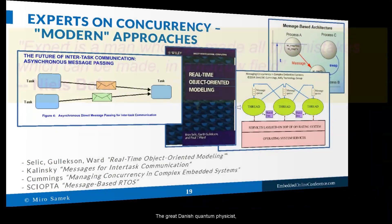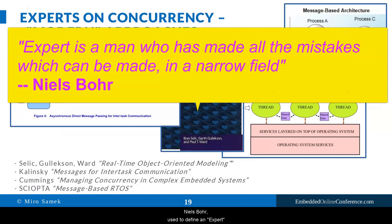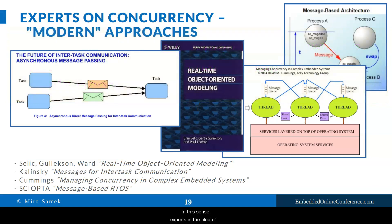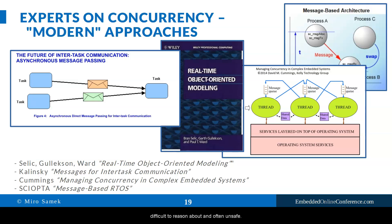The great Danish quantum physicist Niels Bohr used to define an expert as a man who has made all the mistakes which can be made in a narrow field. In this sense, experts in the field of concurrency notice that the use of naked threads and the multitude of blocking mechanisms often leads to systems that are unresponsive, difficult to reason about, and often unsafe.